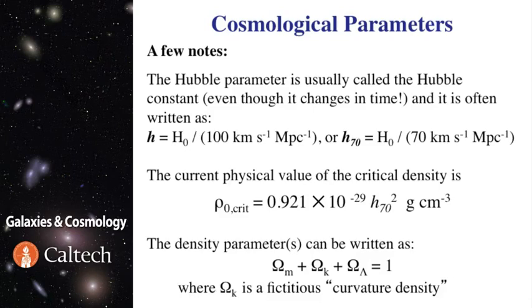The current value of the critical density, which is determined entirely by the value of the Hubble constant, is approximately 10 to the minus 29 grams per cubic centimeter, including both matter and energy.